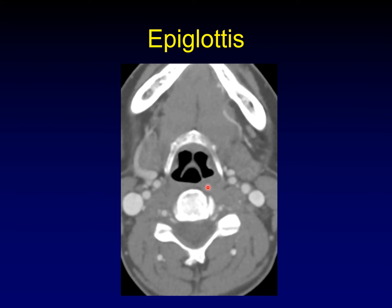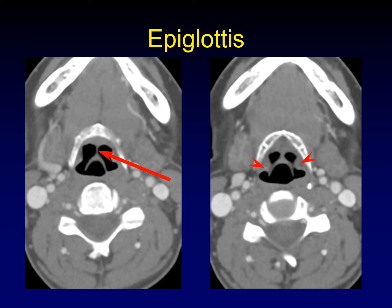Here's the epiglottis as seen in the axial plane. Notice how thin the normal epiglottis is — it's like a pencil line drawn onto an axial image. There are a couple of connections between the epiglottis and the surrounding mucosal surfaces. The epiglottis is anchored inside the larynx within the supraglottis, and we'll talk about that in a second.